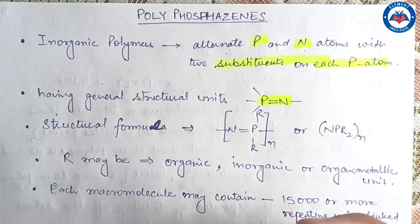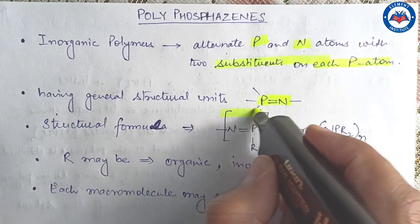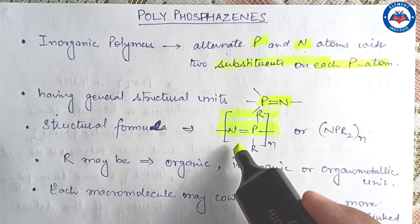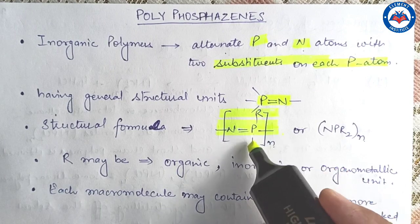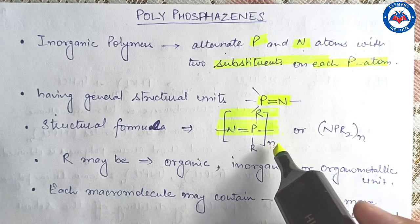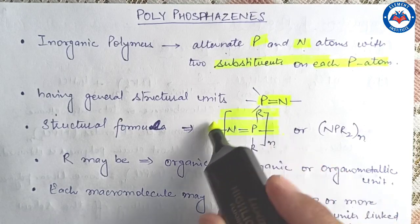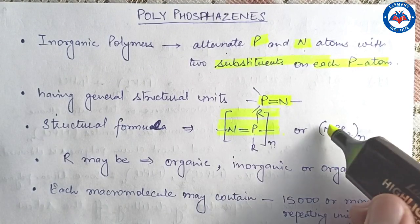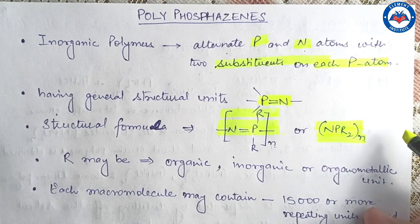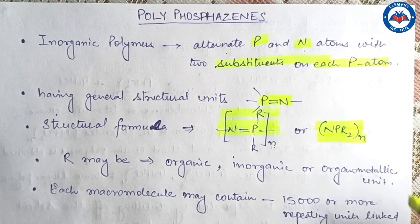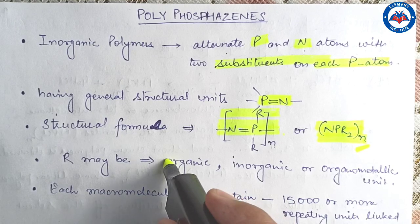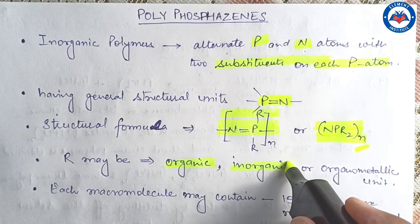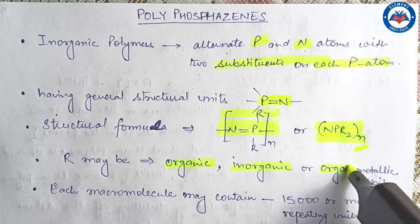They have a structural formula in which we have nitrogen and phosphorus with a double bond, and two R groups are attached on the phosphorus. This formula can be written in a simple form as (NPR2)n, where n is the number of monomer units. The R group may be an organic group, an inorganic group, or an organometallic unit.